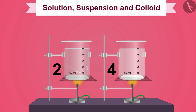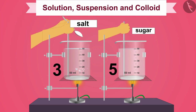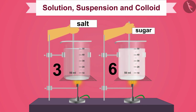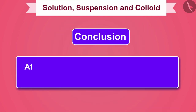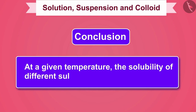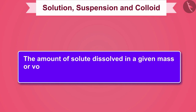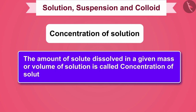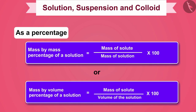Now if we heat these two saturated solutions by five degrees more and then try to dissolve more salt and sugar, we can see that we are able to dissolve more solute. From this we can conclude that at a given temperature the solubility of different substances is different. The amount of solute dissolved in a given mass or volume of solution is called the concentration of solution, which can also be expressed as a percentage.